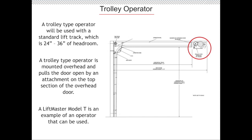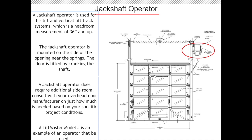A trolley type operator will be used with a standard lift track, which is 24 to 36 inches of headroom. A trolley type operator is mounted overhead and pulls the door open by an attachment on the top section of the overhead door. A LiftMaster Model T is an example of an operator that can be used. A jack shaft operator is used for high lift and vertical lift track systems — 36 inches of headroom or more. The jack shaft operator is mounted on the side of the opening near the springs and lifts the door by cranking the shaft. A jack shaft operator requires additional side room, so consult with your overhead door manufacturer. A LiftMaster Model J is an example of this type of operator.